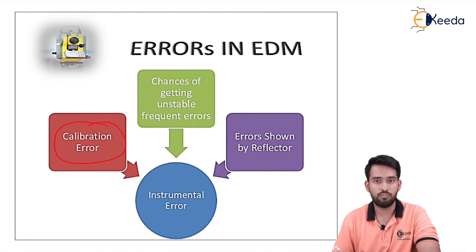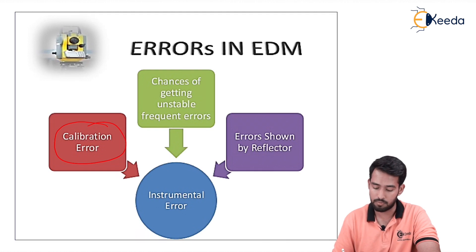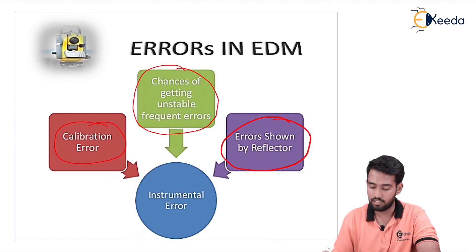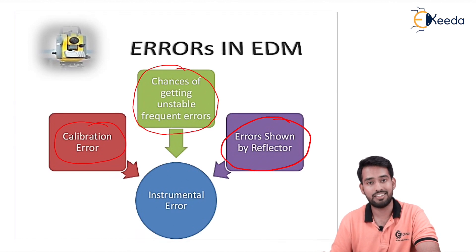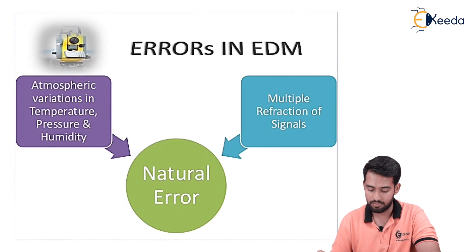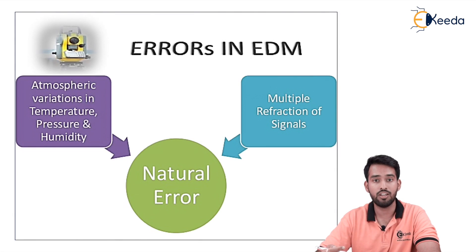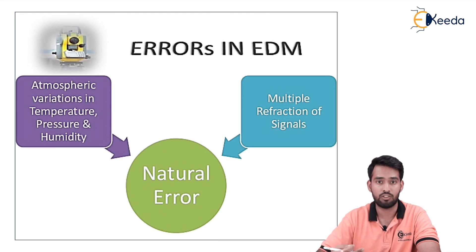Instrumental errors include: failure to calibrate the EDM accurately before use; chances of getting unstable or frequent errors due to some kind of disturbance; and errors shown by the reflector — if the reflector is not reflecting back properly, there will be an error. Natural errors arise from variations in the atmosphere, such as changes in temperature, pressure, and humidity, because of which the frequency and velocity of the waves may vary, causing obstacles in wave travel.